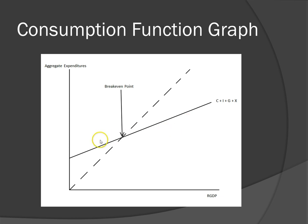If the economy is left of the break-even point, the high spending means that businesses need to keep up with high demand. They will hire more workers, which means more income for people, and then spending will increase toward the break-even point. If the economy is to the right, it means people are not spending enough money, businesses will fire some workers, and this will cause income to decrease back to the break-even point.